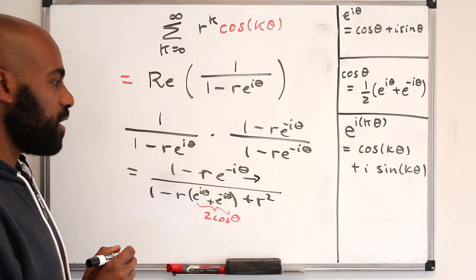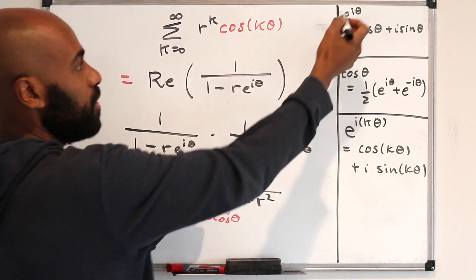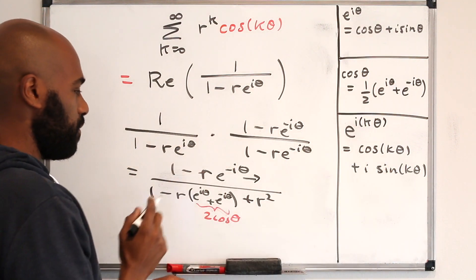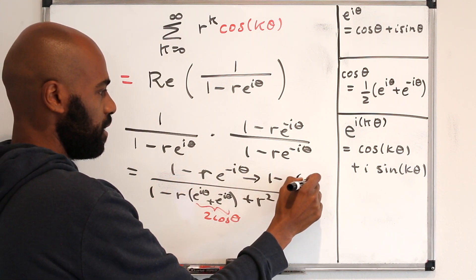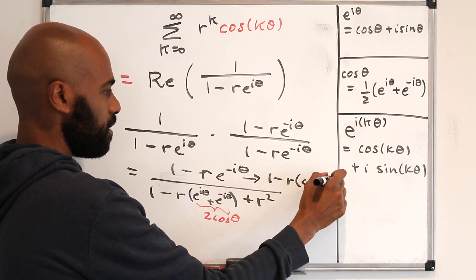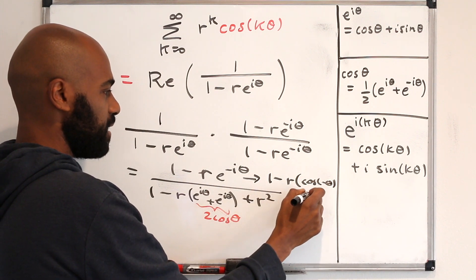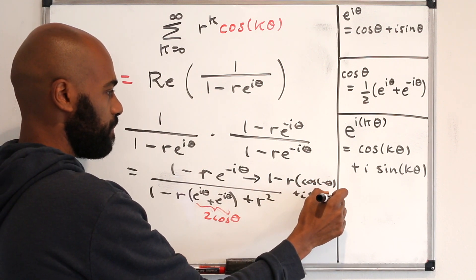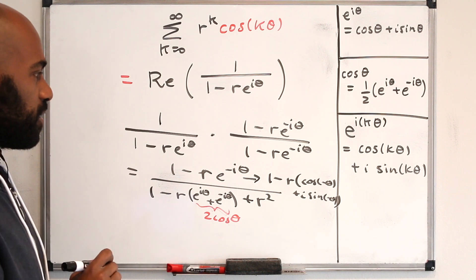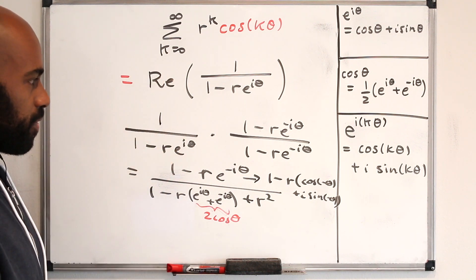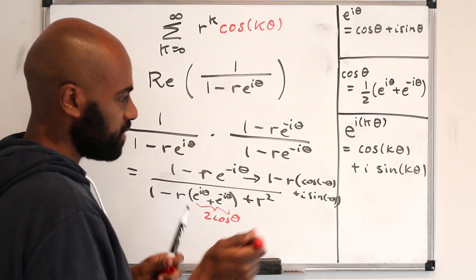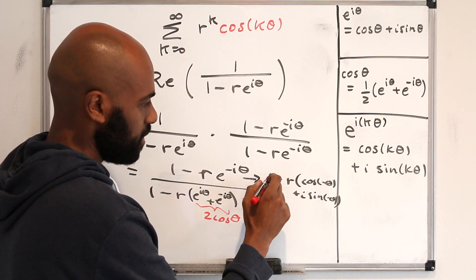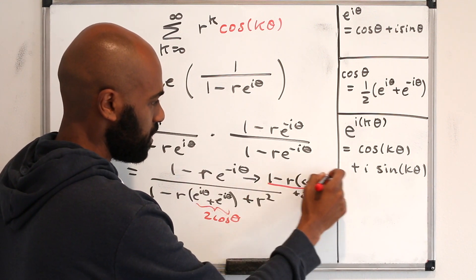Well, the numerator we can express now using this formula right over here. This is 1 minus r times the quantity cosine of negative theta plus i sine of negative theta, and the thing we're interested in here is the real part of that number. The real part of that number is everything that evades the imaginary part, so is this part right over here.